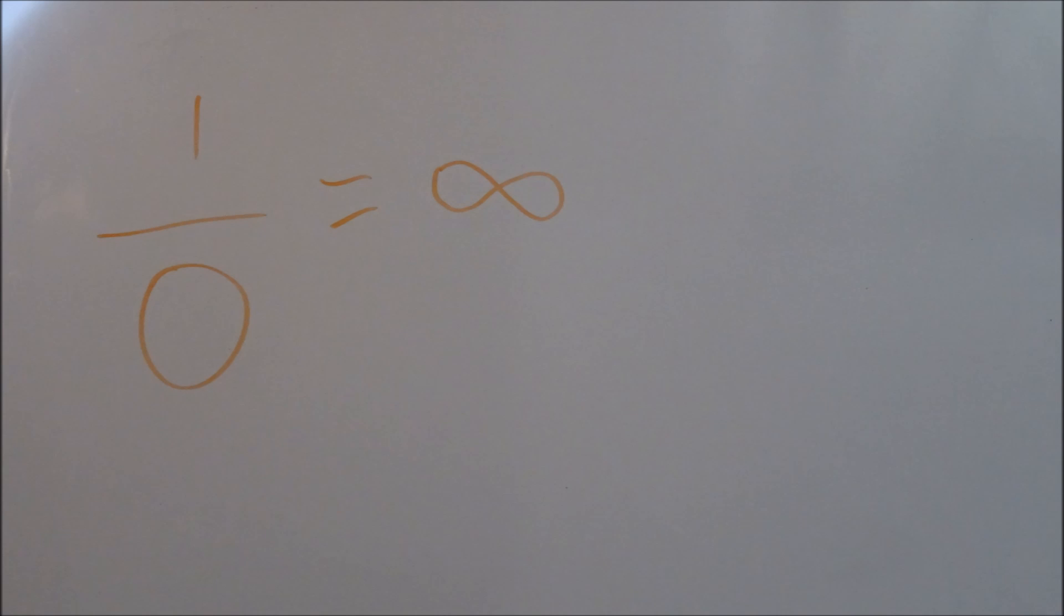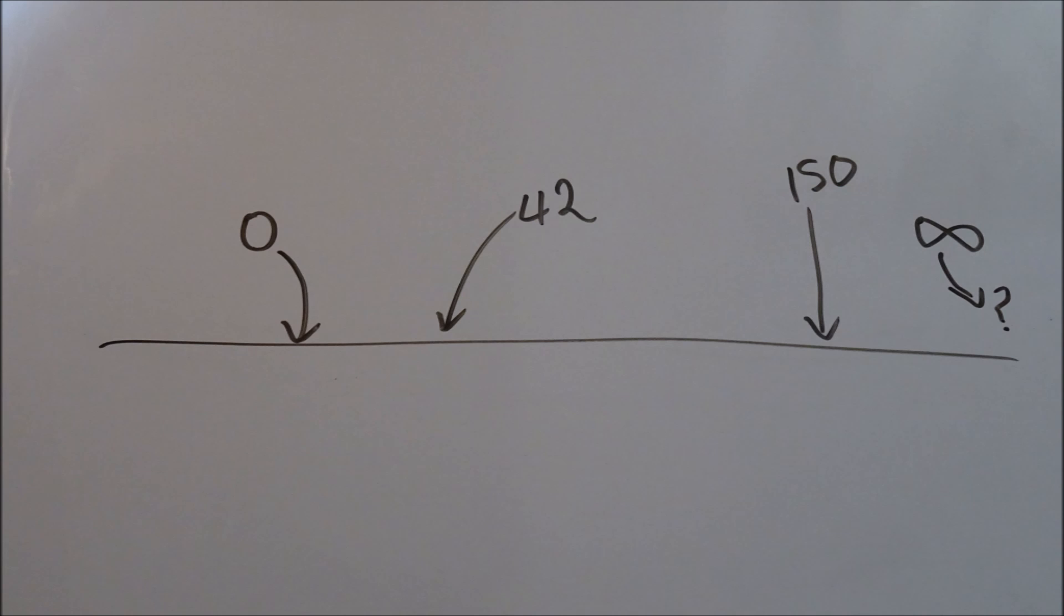And if 1 over 0 is infinity, and 2 over 0 is infinity, then that means 1 equals 2, which I don't think is right, although mental arithmetic has never been my strong point. And also, infinity's not an actual number.